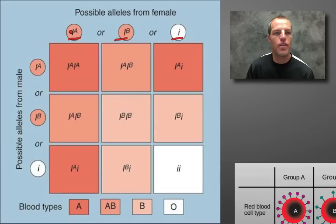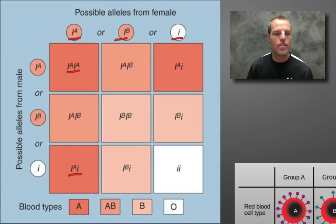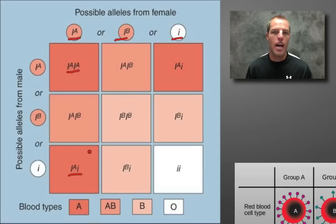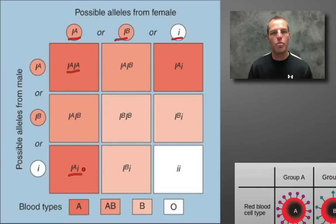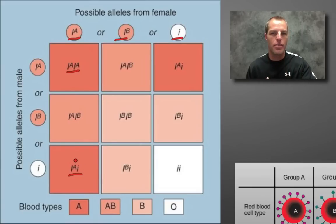If you look here at one example: type A blood — it could have a homozygous genotype with two A alleles and have A blood, or it could be heterozygous with the other allele being the recessive form of the gene which controls O blood. It's still going to be A because that idea of dominance masking the recessive still applies.